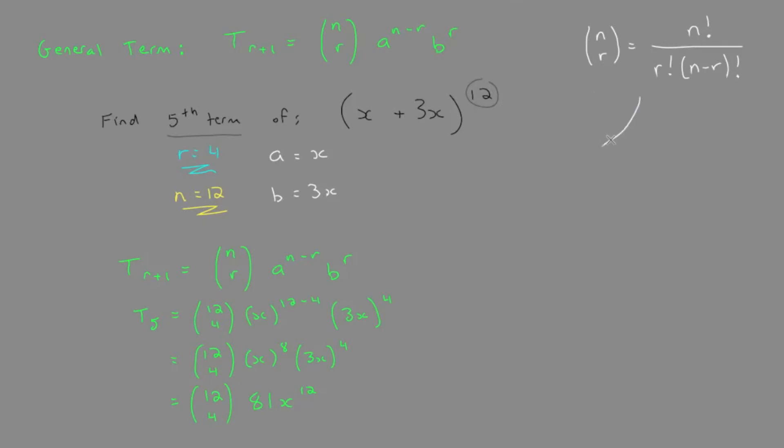So we're going to do 12 choose 4. This equals 12 factorial over 4 factorial times 8 factorial.